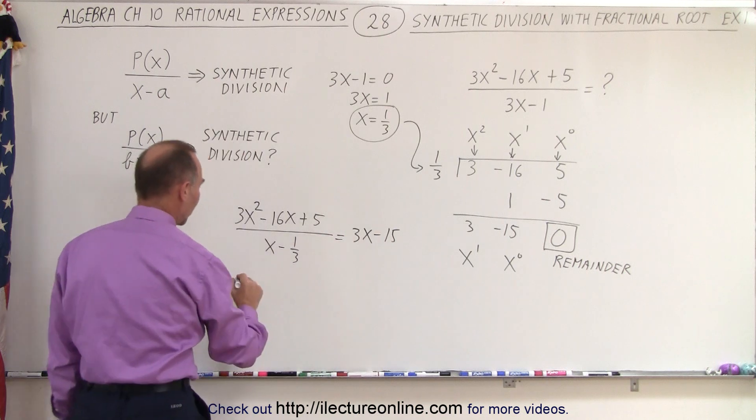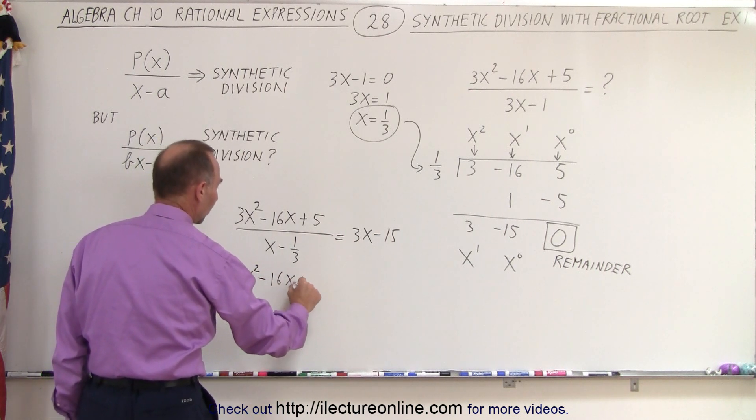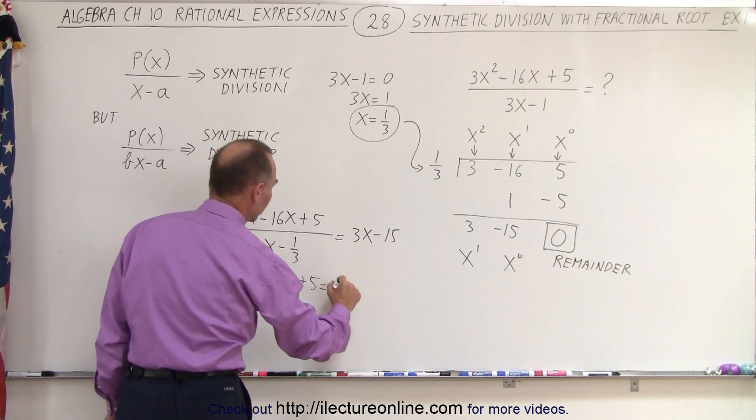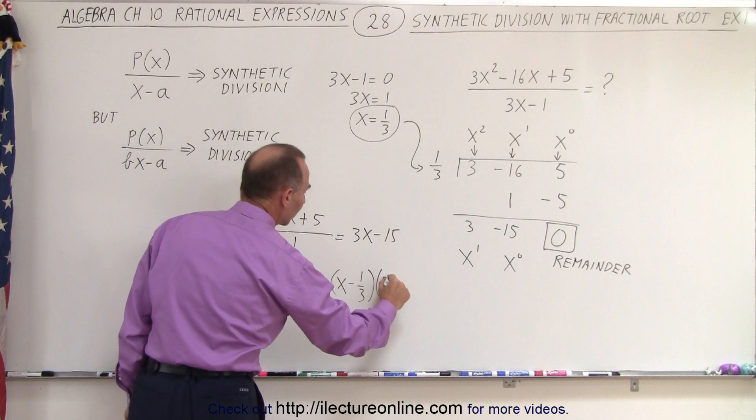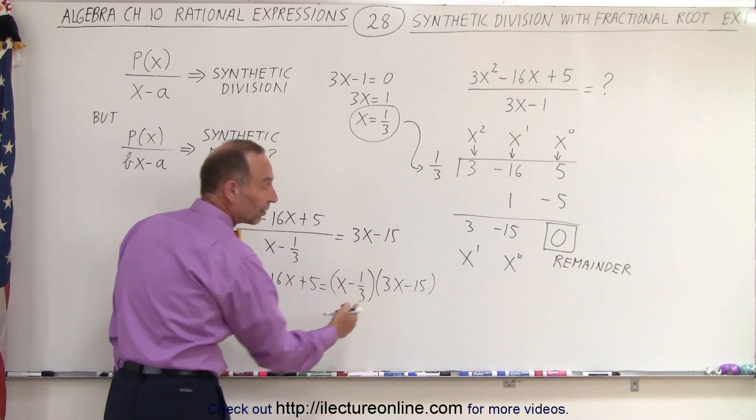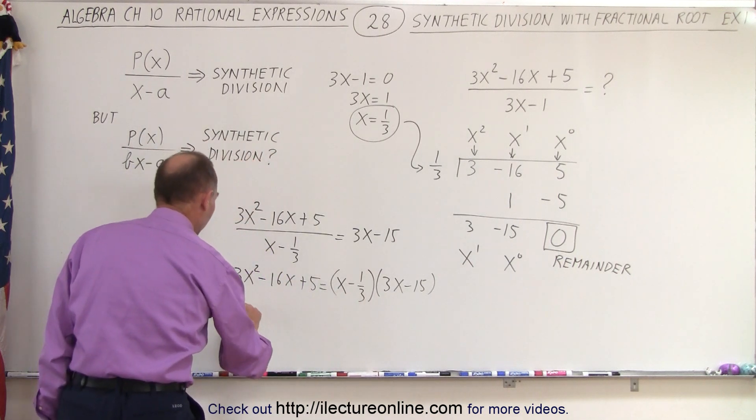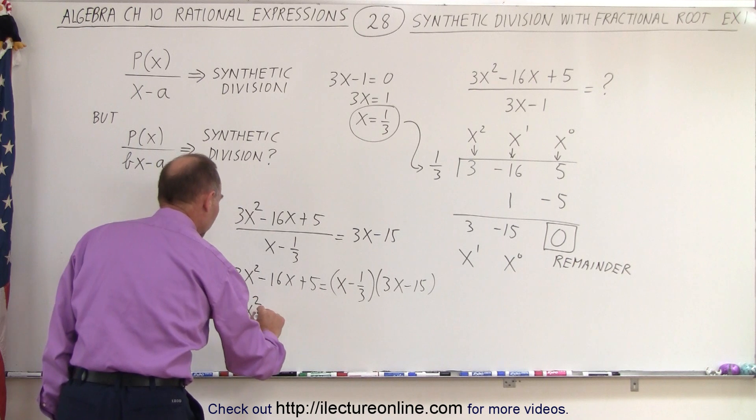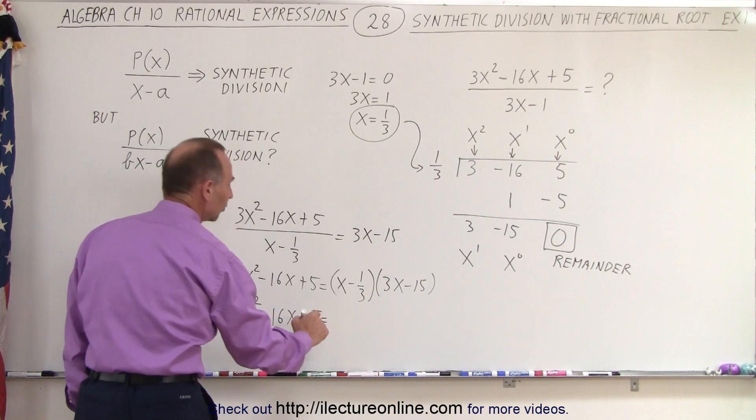Now if we cross multiply, we get the following. We get 3x squared minus 16x plus 5 is equal to x minus 1 third times 3x minus 15. And then if we factor out a 3 here, if we multiply that times over here instead, we can do the following.